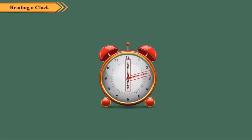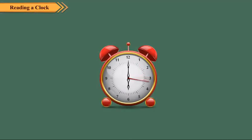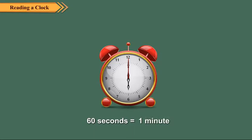A clock has three hands. The longest hand is called the second hand. It moves the fastest. It completes one round of the dial in 60 seconds, or 1 minute. So, 60 seconds is equal to 1 minute.